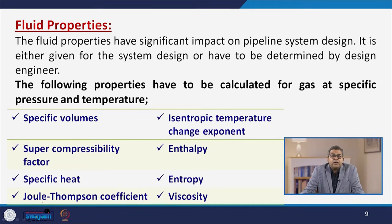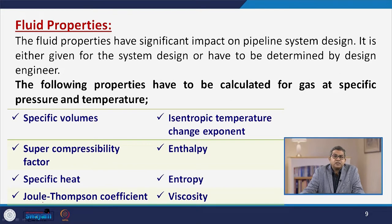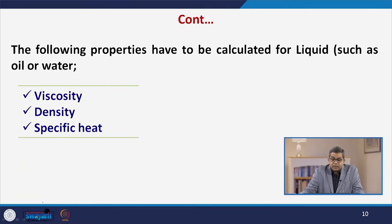Fluid properties have a significant impact on pipeline system design; they are either given for the system design or have to be determined by the design engineer. For gas at a specific pressure and temperature, various properties need to be calculated, since pressure and temperature are variable. These include specific volume, super-compressibility factor, specific heat, Joule-Thompson coefficient with respect to expansion and contraction, isentropic temperature change, enthalpy, entropy, and viscosity.